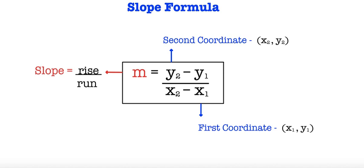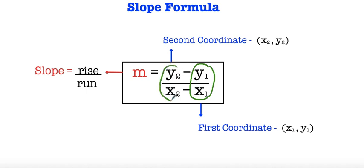So here I have m equals y sub 2 minus y sub 1. Our y sub 2 is our second y coordinate and we're subtracting by our first y coordinate because we want to see that change — the change in y to find out our rise. And then here I have x sub 2 minus x sub 1 which is the change in our x values. So here we have our first coordinate and here we have our second coordinate — make sure you line them up because if we don't we're not going to get the right change.